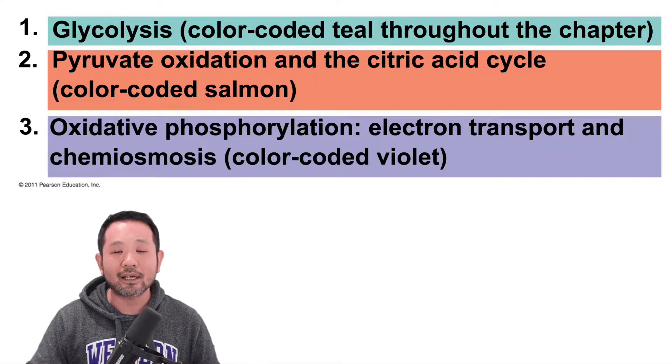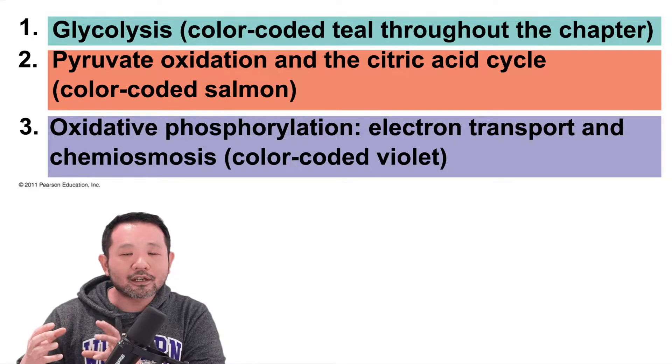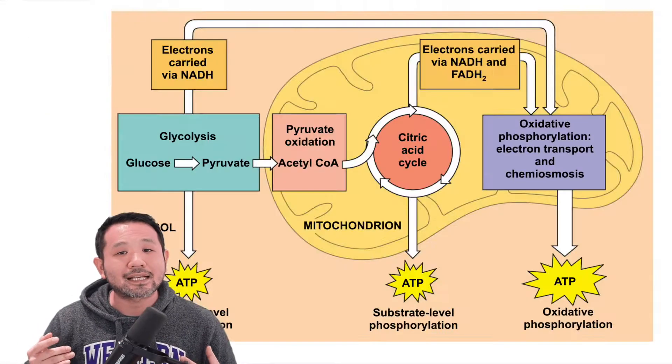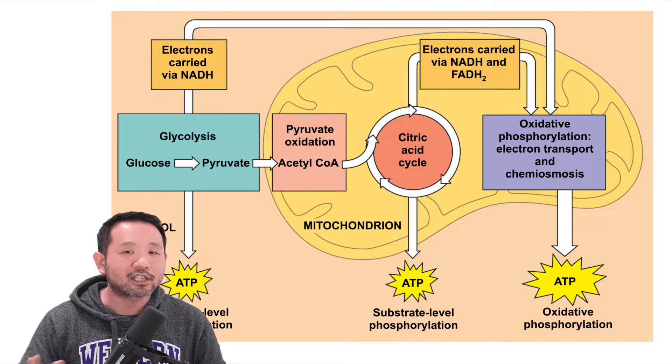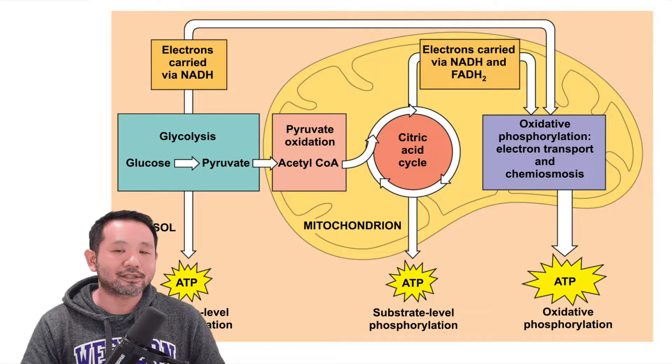Parts 2, 3, 4, and 5 are going to deal with glycolysis, pyruvate oxidation, Krebs cycle, and oxidative phosphorylation. I divided those processes into four different parts, although the book treats them as three — glycolysis, then pyruvate oxidation and the Krebs cycle grouped together, and oxidative phosphorylation as the last step. But I do think that pyruvate oxidation is pretty important, so I'm going to separate them. Before we get to that, we need to talk about glycolysis.